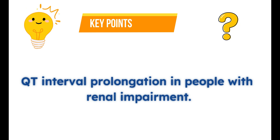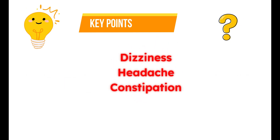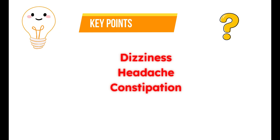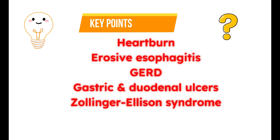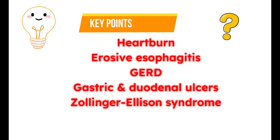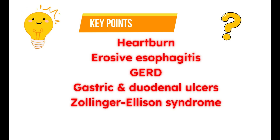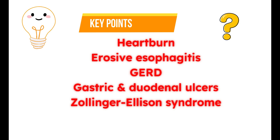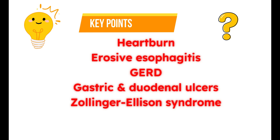What are the important side effects? Famotidine mainly produces dizziness, headache, and constipation. What are the clinical uses? Famotidine can be used in conditions associated with excessive gastric acid secretion — including heartburn, erosive esophagitis, gastroesophageal reflux disorder, Zollinger-Ellison syndrome, and gastric and duodenal ulcers. Zollinger-Ellison syndrome is a rare tumor that produces gastrin; due to overproduction of gastrin it increases gastric acid secretion, and famotidine can be used to control this.